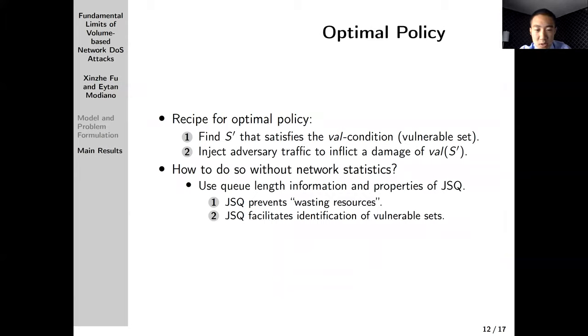Based on the feasibility region, we continue to talk about the optimal policy. The reasoning about the feasibility region gave us a recipe for finding an optimal policy. The optimal policy needs to first find a subset of servers that satisfy the val-condition, we'll call this a vulnerable set. Second, we need to find a way to inject the adversarial traffic to inflict the damage that is equal to val(S'). If we know all the network statistics, this is easy to do. We can enumerate over all the subsets, and for each subset, we solve the corresponding LP and inject according to the LP solution. But how to do so without the knowledge of network statistics? The answer we give is to use the queue length information and take advantage of the properties of join-the-shortest-queue.